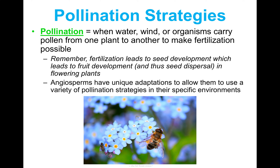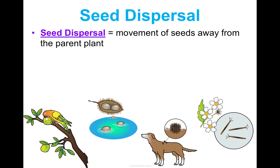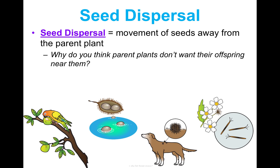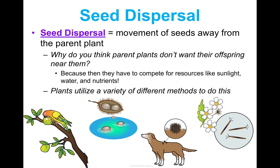Seed dispersal is the movement of seeds away from the parent plant. Why would a parent plant not want offspring near them? They'd be competing for resources — if seeds fall right next to the parent and germinate into a mature plant, both are competing for the same water, sunlight, and nutrients in the soil. So plants want to send their seeds far away so both the parent and the seeds can survive and develop into plants.